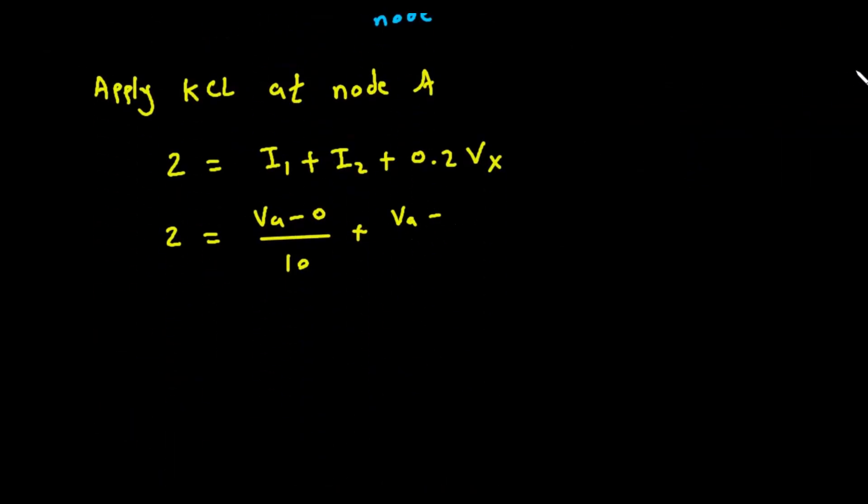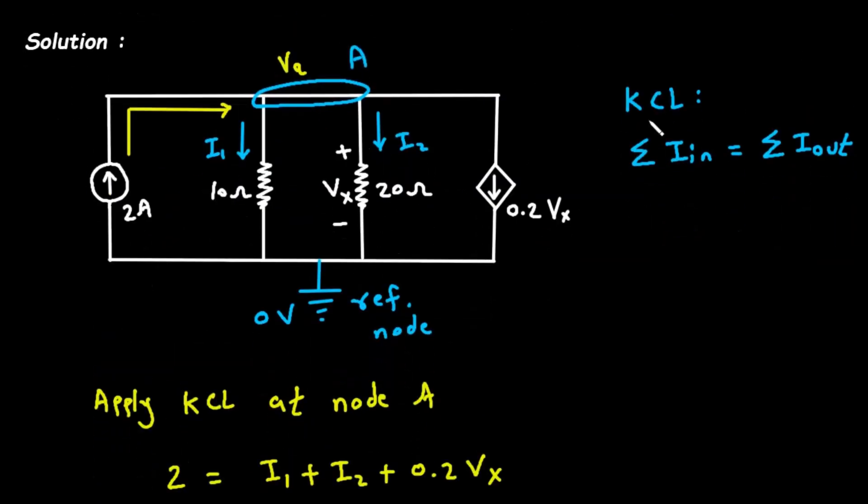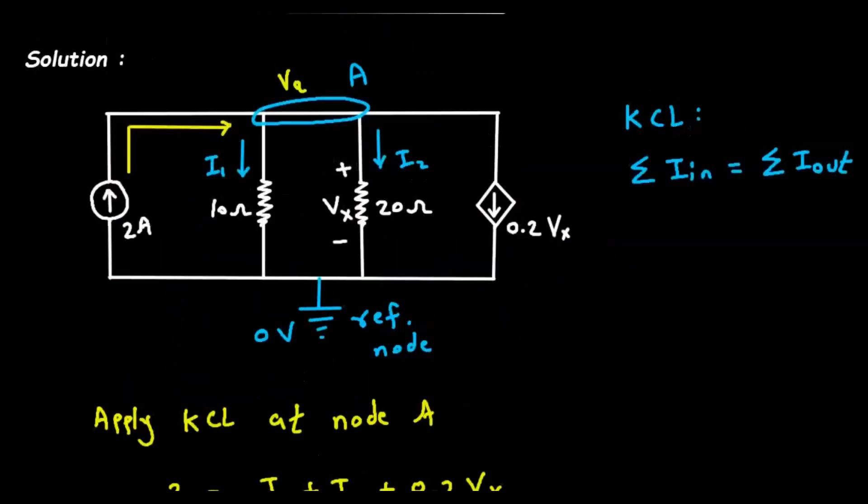Now here we can see this Vx, this voltage is equal to Va simply. So here we can write Va is equal to Vx because the voltage across this 20 ohm is Va, because it is in parallel so the voltage will be same.